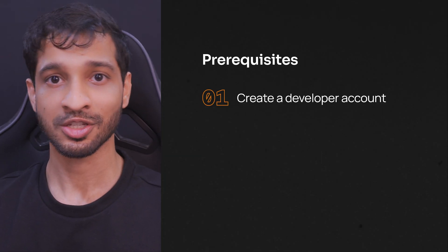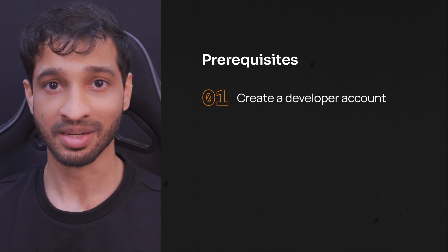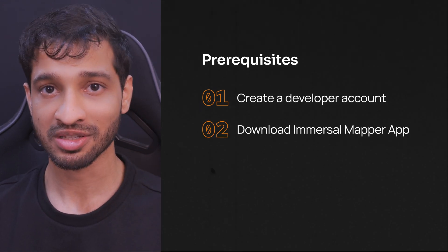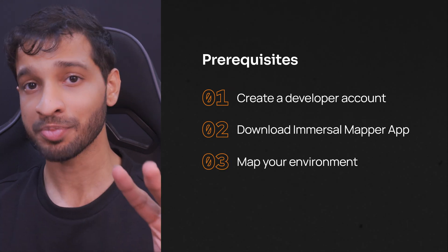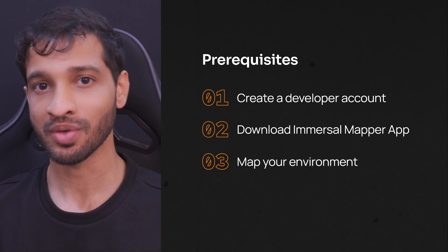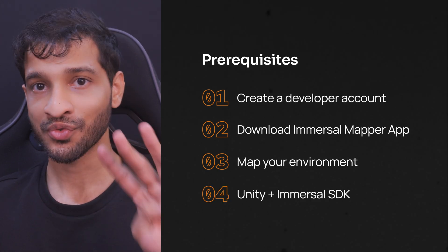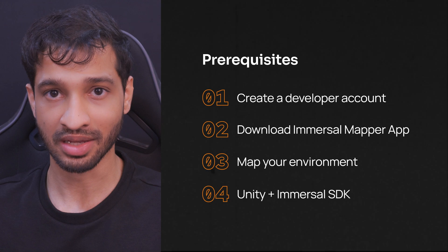To get started, there are four prerequisites that you'll have to meet. I will give you an overview, but if you want more detail, you can check out this video over here. The first prerequisite is to create a developer's account. Second is to download the Immersal Mapper app and log in using the same developer credentials. The third prerequisite is to use this app and map your environment — I used manual mode and carefully mapped this room. The fourth and final requirement is to have a Unity project set up with the Immersal SDK.